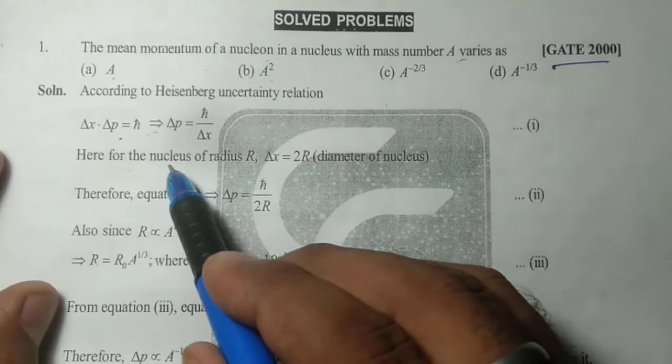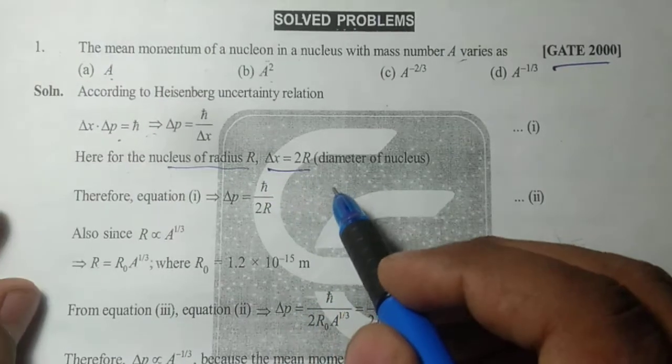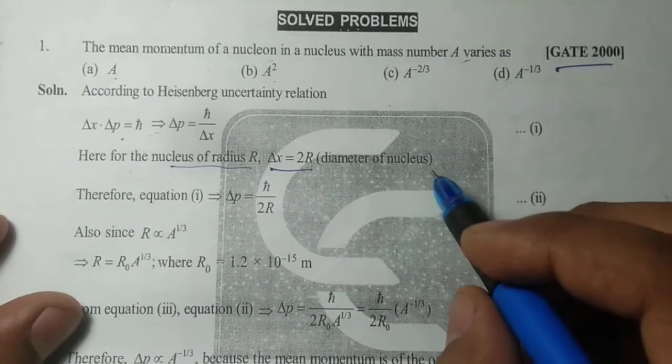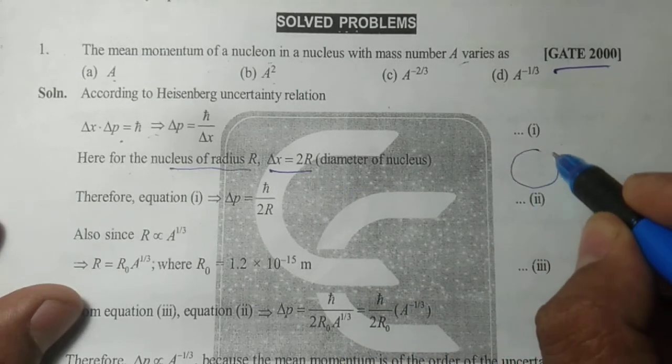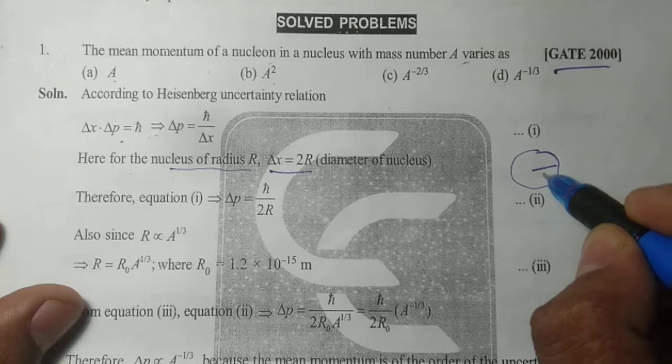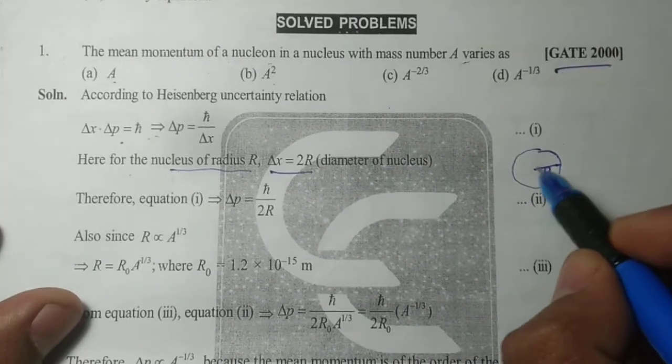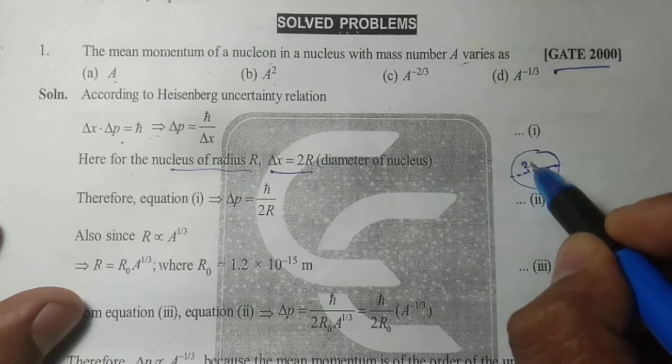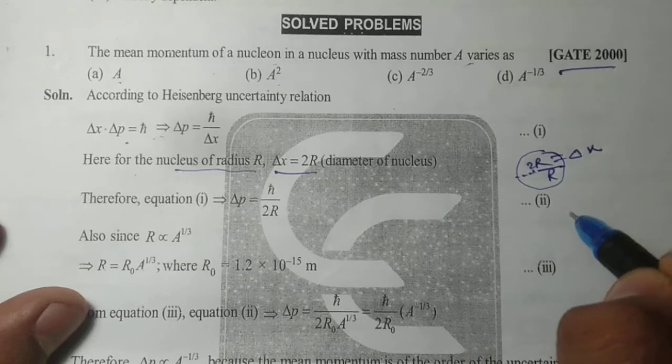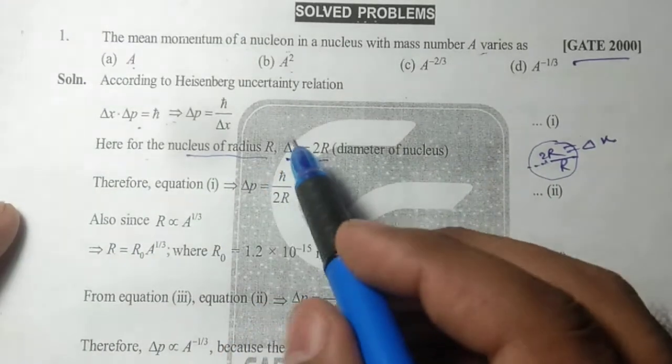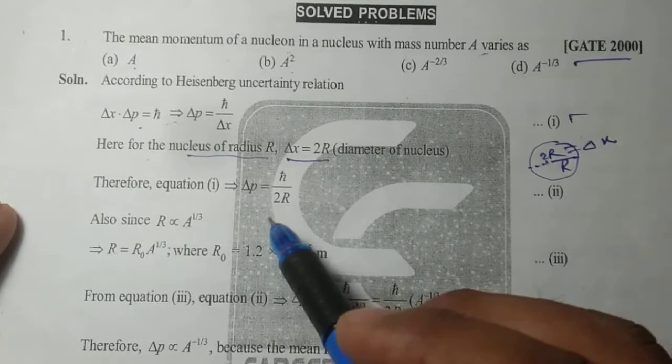For the nucleus of radius R, we can choose delta x equal to 2R because the nucleus is a sphere. Therefore, from equation one, delta p equals h bar upon 2R.